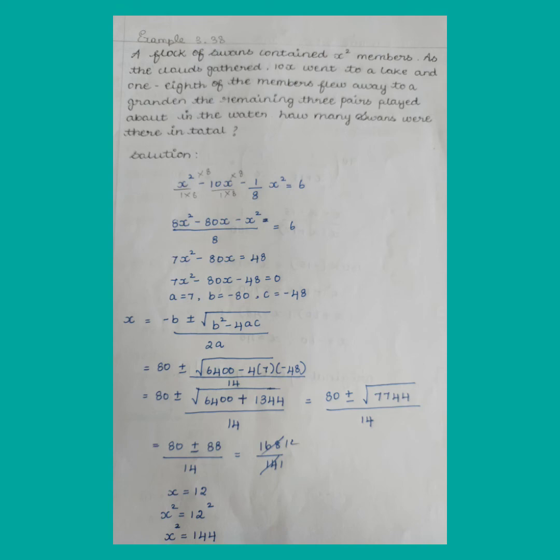This alone when x is equal to minus b plus or minus root of b squared minus 4ac by 2a. Apply the quadratic equation formula: 80 plus or minus root — b value is 80, so 80 squared is 6400, minus 4 into a value 7.